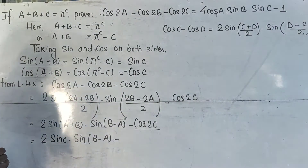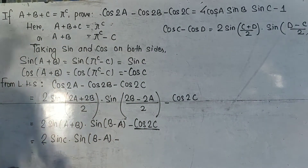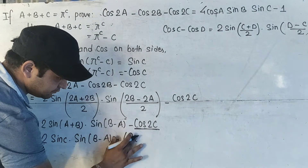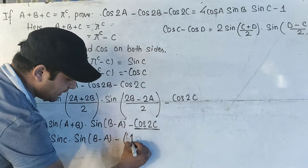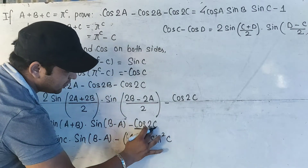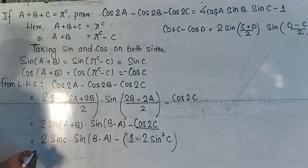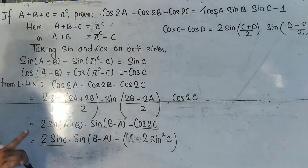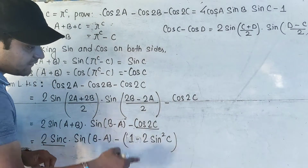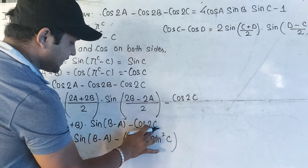I repeat one more time: the last term's formula should be used in such a way that you can take 2·sinC common. So the formula cos2C = 1 minus 2·sin²C — we have chosen this formula because we will be looking to take 2·sinC common. So we will write cos2C = 1 minus 2·sin²C, and this allows us to take 2·sinC common.